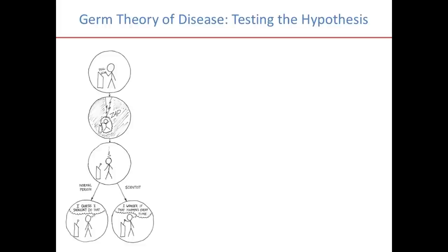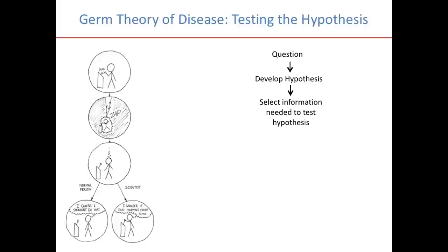How do we test hypotheses? We start out with a question, and based on your question you develop a hypothesis. In the particular example of the germ theory of disease, we start with the question: what causes disease? The hypothesis developed was that microorganisms or germs cause disease. Once you have the hypothesis, you need to develop an experiment or select information needed to test the hypothesis, and then you start doing observations and experimentations.